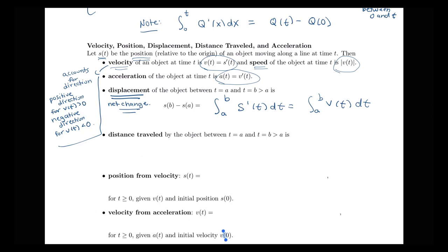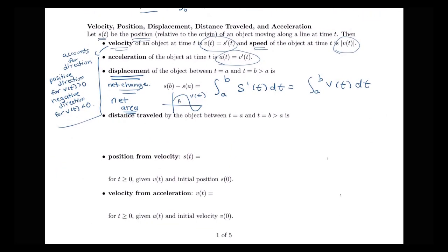In terms of a graph of a velocity function, net change corresponds to net area. If we have a velocity function that's positive over part of the interval and negative over another part, with areas A1 and A2 respectively, then displacement over [a, b] equals the integral from a to b of v(t) dt, which equals A1 minus A2. So it's the net signed area under the velocity curve.